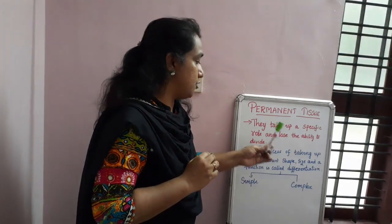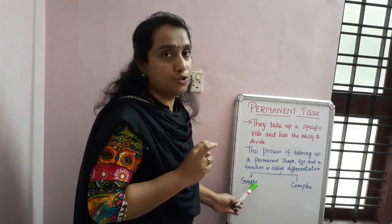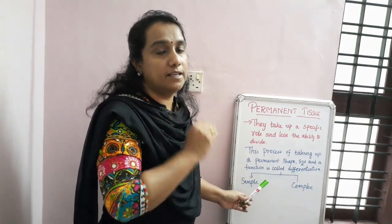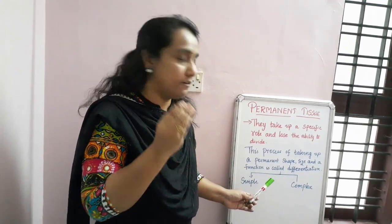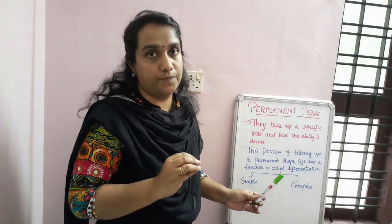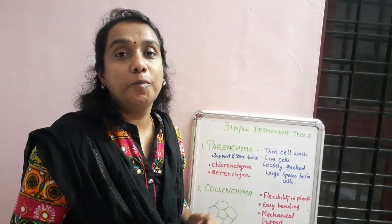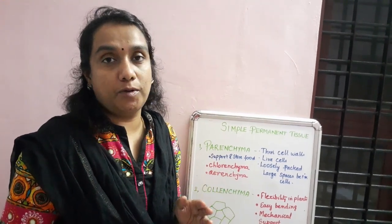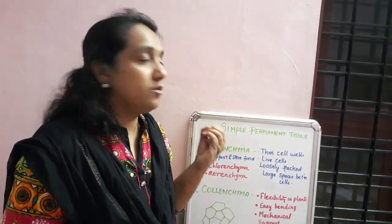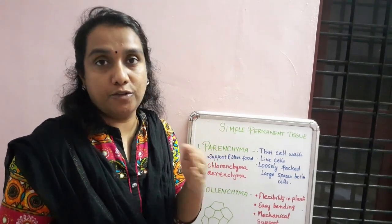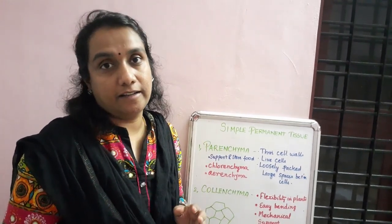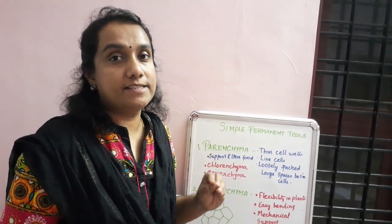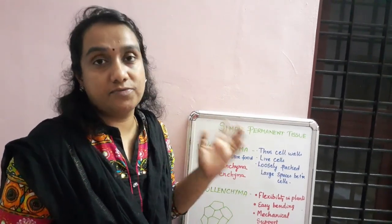Permanent tissues are divided into simple permanent tissue and complex permanent tissue. Now we will see three different types of simple permanent tissue. In simple permanent tissue, three categories are there: parenchyma, collenchyma, and sclerenchyma. Let's see their structure and function.